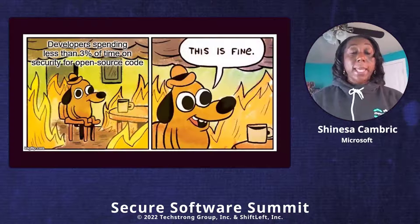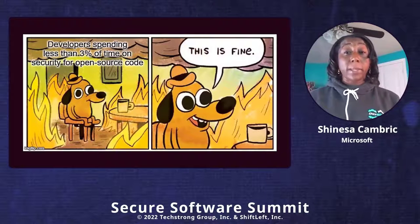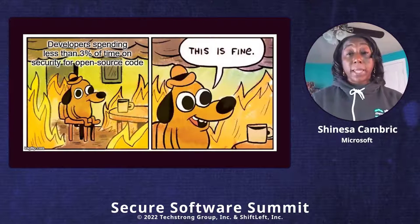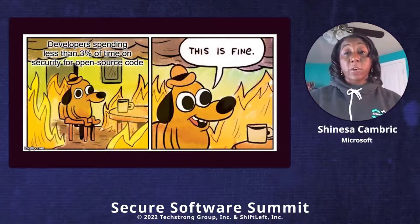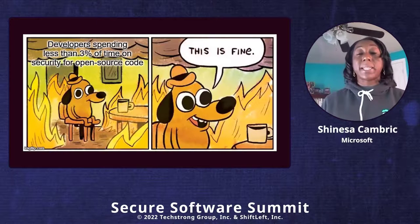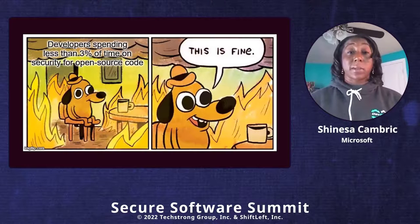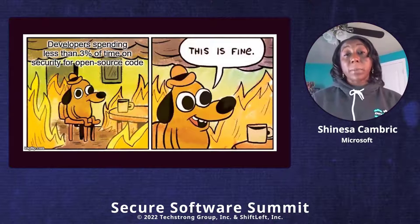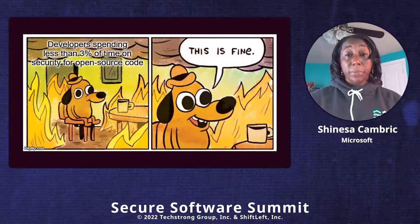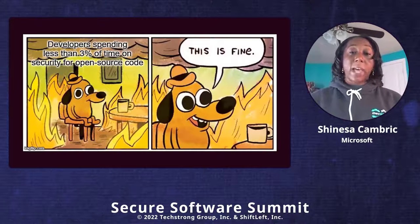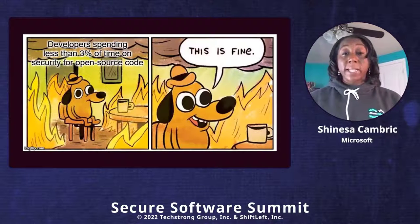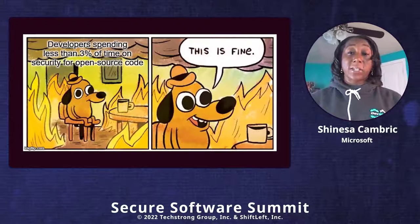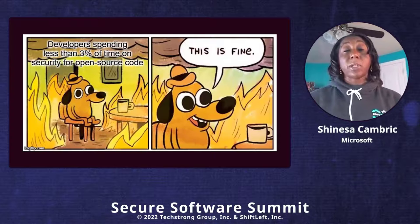Going back to December 2020, in that same month we had the SolarWinds software supply chain attack — a very large global impact for both private, public, and government companies. Then fast forward a year to December 2021, we had the Log4j vulnerability, where companies were scrambling to address it and understand the impact to their environment, including their vendors and suppliers — and unfortunately some companies were attacked as a result. Forrester's 2020 State of Application Security report says application vulnerabilities will continue to be the most common external attack method, and Verizon's data breach report confirms the same trend.